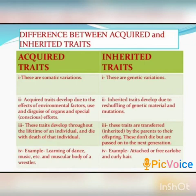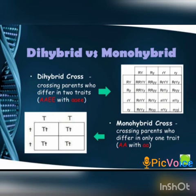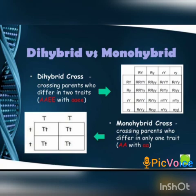So that is the difference between acquired and inherited traits. Children, you learned about monohybrid and dihybrid crosses. How do Mendel's experiments show that traits may be dominant or recessive? If you see such a question, you have to do the monohybrid cross and explain the same. And if the question is how do Mendel's experiments show that traits are inherited independently, you have to do the dihybrid cross and explain it.